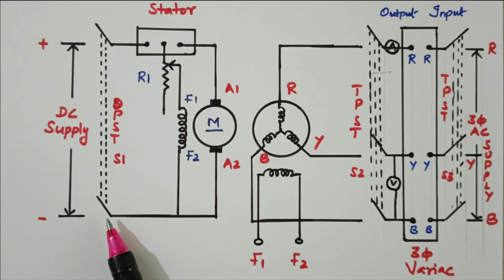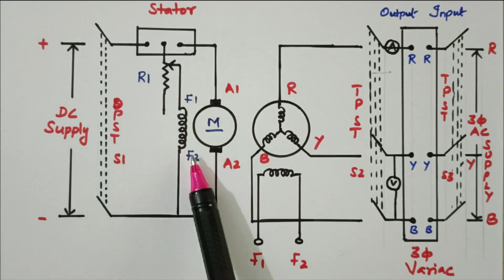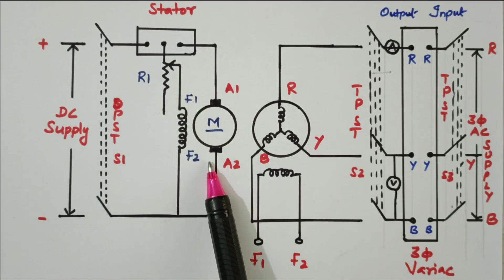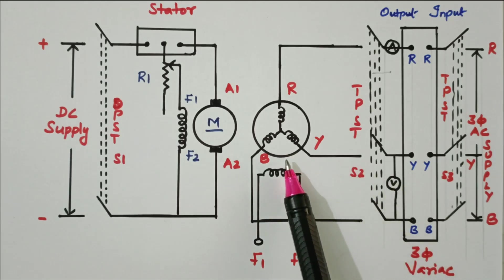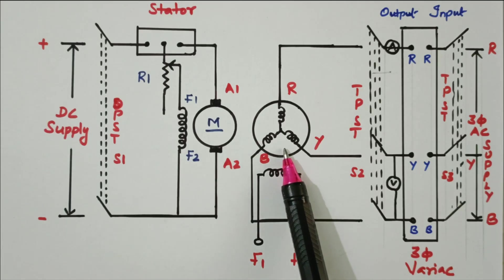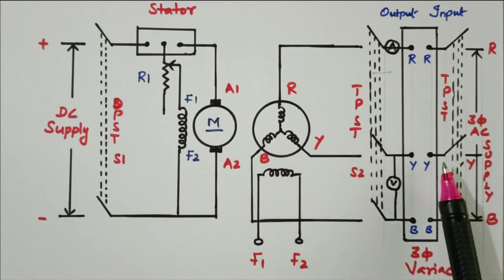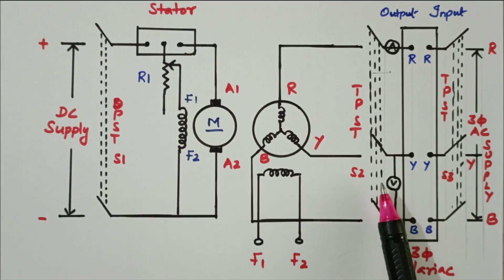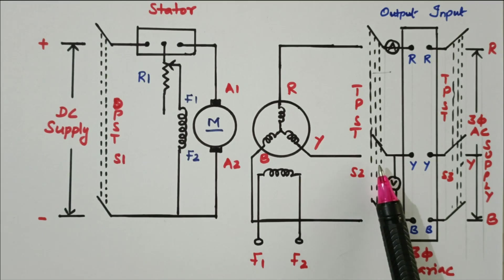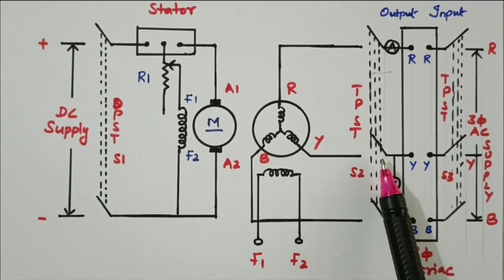First, DC supply is given to the motor. By adjusting the field winding we can vary the field current, so we bring the motor to rated speed. Since the motor is coupled with the alternator, the alternator also rotates at synchronous speed. After the alternator reaches synchronous speed, using the three-phase variac the supply is given to the alternator with the field winding kept open. When voltage is maximum and current is minimum, we can find the Xd parameter.